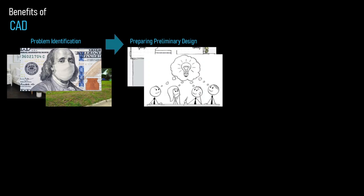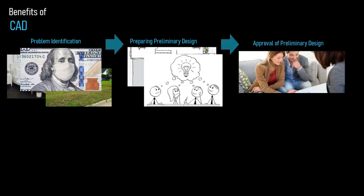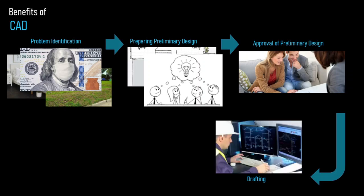After problem identification, you proceed to preparing the preliminary design. You can present the preliminary design through a sketch or through CAD. Designers then do brainstorming to determine what is best for the client. After that, you meet again with the client for the approval of the preliminary design. If revisions are requested, you present an immediate solution. Once the preliminary design is approved, you present it to the drafters for drafting.